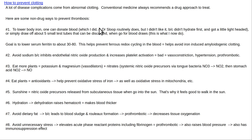Conventional medicine will always talk about drug approaches, which can be beneficial, but that's not what we're covering here. We're going to talk about non-drug ways to prevent blood from clotting abnormally. First: iron overload. Most people are iron overloaded — almost all men over about age 25 tend to be iron overloaded, and women tend to become overloaded after menopause when they stop menstruating.